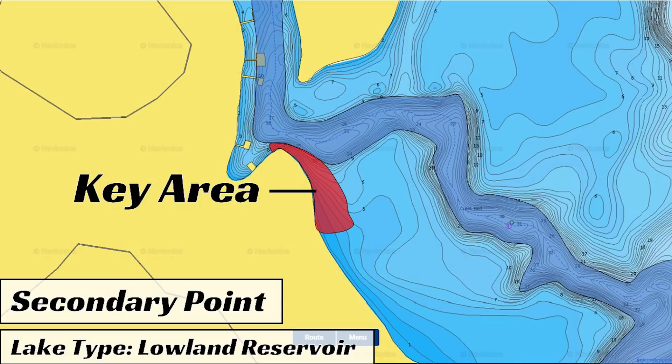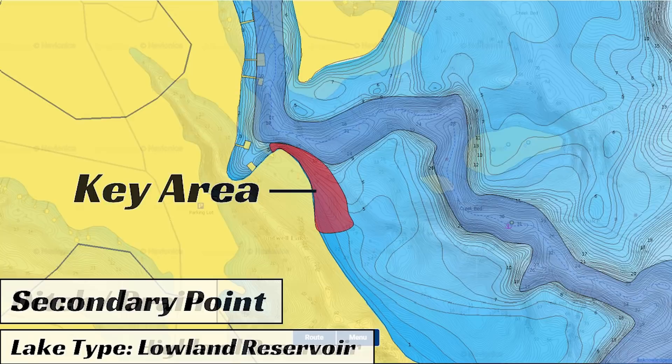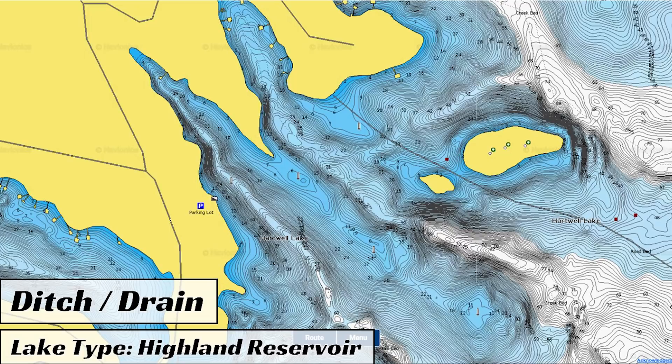The first type of structure I showed you was more related to the shoreline or shallow water. Next, let's talk about an offshore piece of structure that's effective on almost every single lake across the country in the wintertime, and that is a drain or a ditch. The words drain and ditch are used interchangeably in bass fishing to describe a creek channel that runs between two pieces of shallower water. Here's an example of a ditch or drain on a highland reservoir — again, these are going to be deeper, clearer lakes.